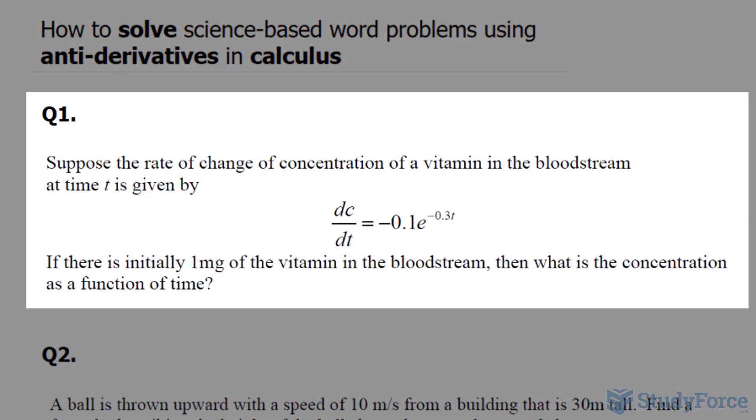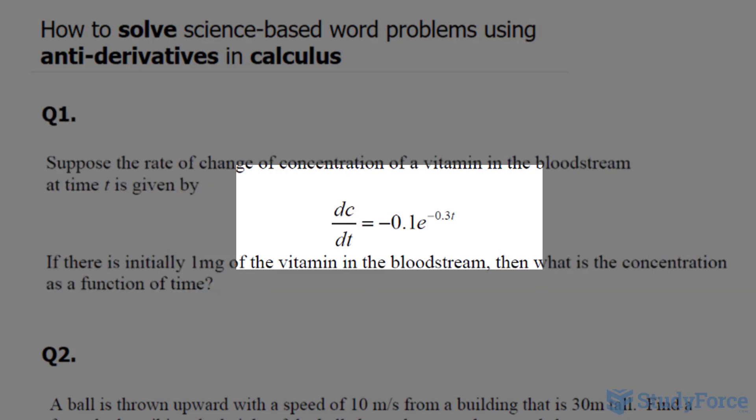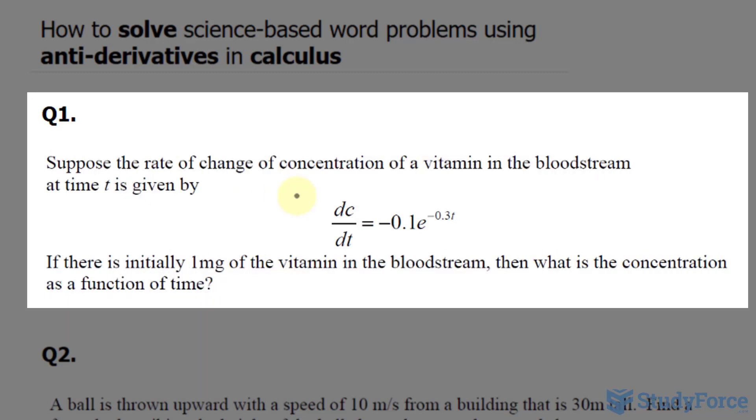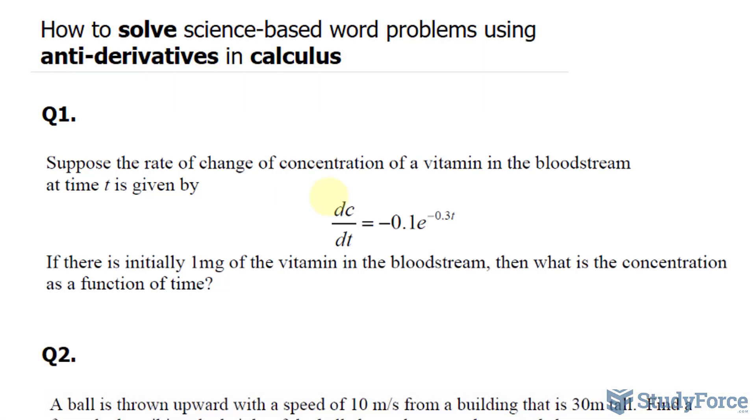Take for example question one, where I was asked, suppose the rate of change of concentration of a vitamin in the bloodstream at time t is given by dc/dt = -0.1e^(-0.3t). If there is initially one milligram of vitamin in the bloodstream, then what is the concentration as a function of time? If you take a close look at this equation, you'll notice that it is the derivative of a function. So what we have to do is find the antiderivative and then subsequently substitute this value in the antiderivative to help us find that function.